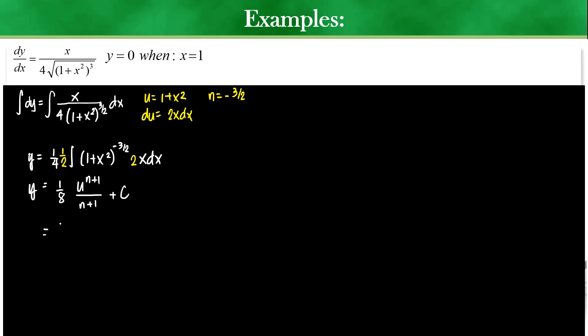But then what is the u? The u is 1 plus x squared. What is the n? Negative 3 halves plus 1 over negative 3 halves plus 1. It should give you a negative 1 half, right? So, eventually, negative 1 half and then this would then be negative 1 fourth, 1 over square root of 1 plus x squared plus c. Am I correct in here?